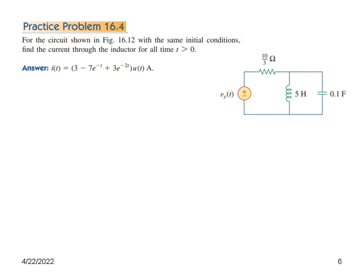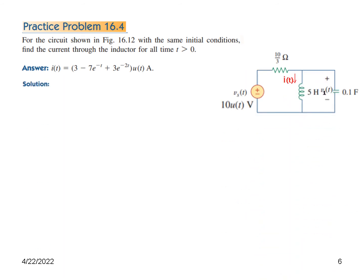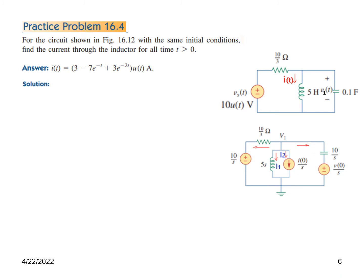For the practice problem, we solve the same circuit with the same initial conditions, but now we find the current through the inductor rather than the voltage across the capacitor. The circuit uses parallel and series connections. We identify currents I1 and I2, so the total i(t) is the inverse Laplace of I1(S) plus I2(S).